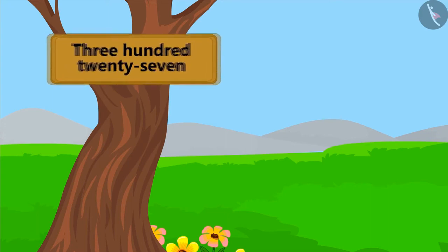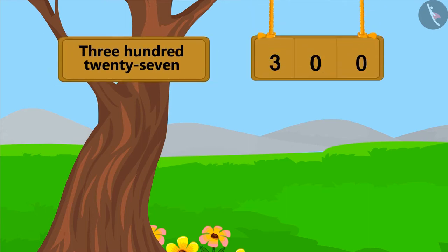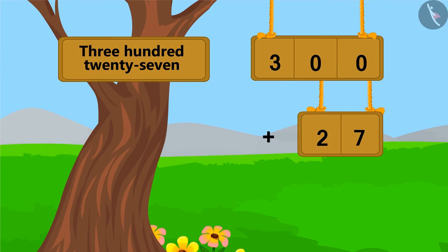Do you remember how to write a number with the help of number name? 327 is 27 ahead of 300. Therefore, we can write it like this by adding 27 to 300.